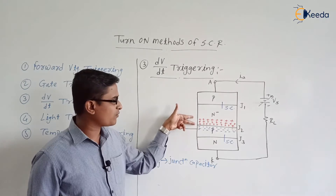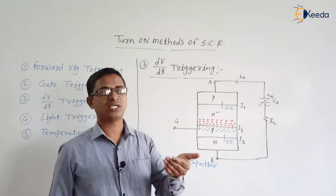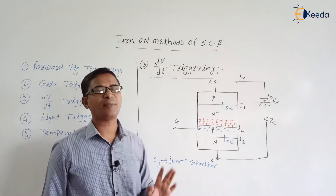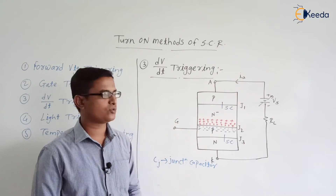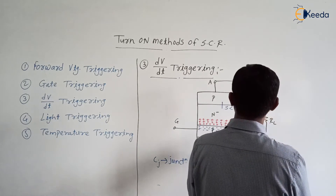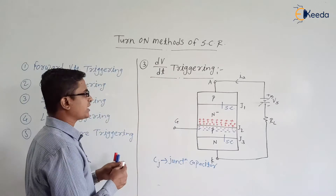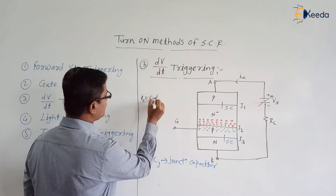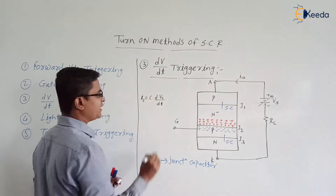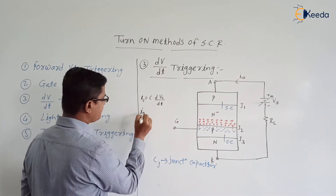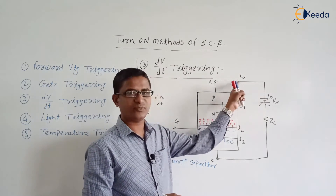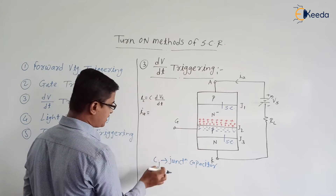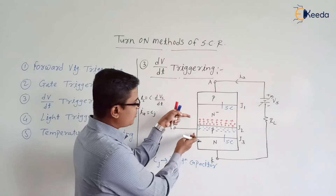Junction J2 consists of positive charges on one side and negative charges on the other side — that is why it acts as a capacitor, and Cj is the junction capacitor of J2. As we know, in the case of a capacitor, current flowing through the capacitor is: Ic = C × dVc/dt. Here Ic is nothing but Ia — the anode current, which is the same current flowing through the device. So Ia = Cj × dVs/dt, where the voltage across this layer is the same as Vs.